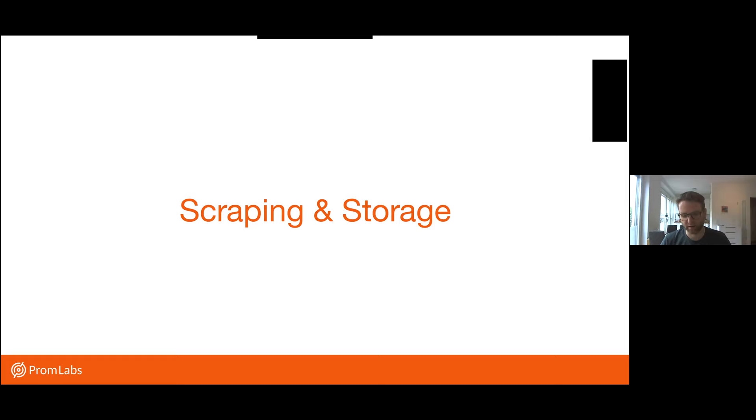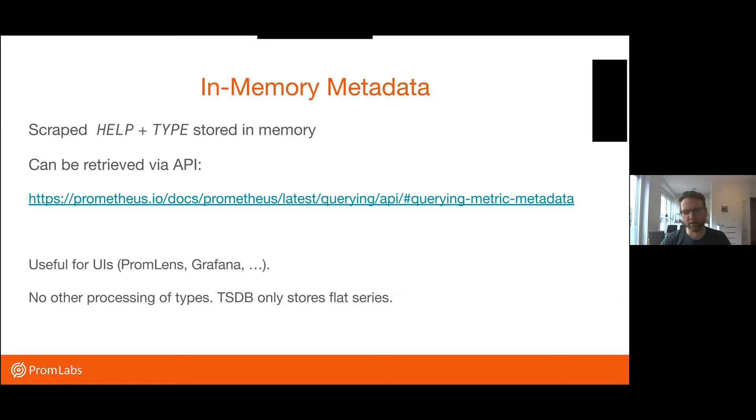So what happens when Prometheus now has scraped this and wants to store it? Actually, not that much. So currently, for the longest time actually, the Prometheus server has just thrown away this help and type metadata. So the actual gauge counter histogram summary type that gets sent in this comment line. Same for the help. But for a while now, it is actually storing that for every target and metric in memory. So you can at least query it over a separate API, not via PromQL, but a separate API. And this is useful for UIs. Like if you type a metric name autocompleting in Grafana, it's already happening, will happen in Prometheus as well. That it shows you the type directly in the autocomplete. But other than that, the TSDB has no idea about metric types. It just stores label sets, samples, done.